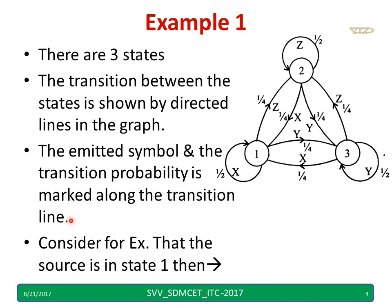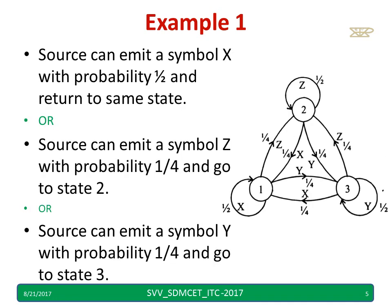Let us take that the source is in state number 1. The source can emit symbol x with probability 1/2 and return to the same state 1. Similarly, the source can emit symbol z with probability 1 by 4 and go to state 2. And the source can emit symbol y with probability 1 by 4 and go to state number 3.